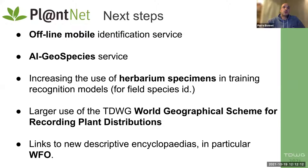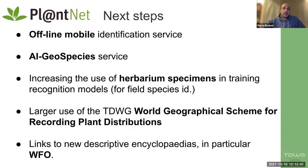To continue progress in the development of services offered, next steps include the development of an offline mobile identification and exploration service, which will allow users to know the most probable species around them. Other plans include using a larger number of herbarium specimens to improve species identification, implementing the TDWG standard for recording plant distribution, and increasing the number of links with descriptive encyclopedias such as World Flora Online.